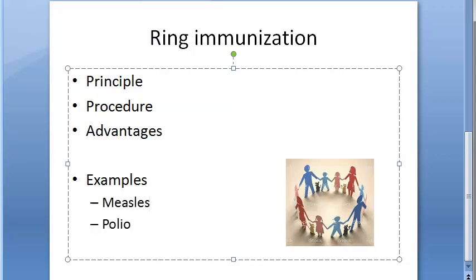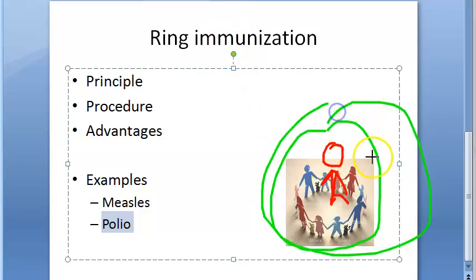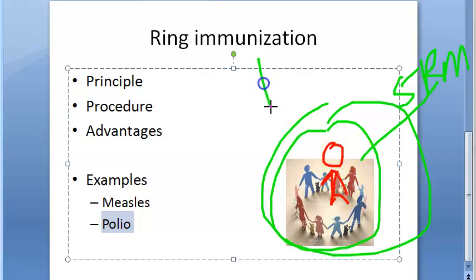Ring immunization is used in cases of measles and polio. Whenever a suspected case of polio is reported, all children below the age of five years — minimum 5000 children — in the affected area covering a radius of five kilometers are given an extra dose of oral polio vaccine within 24 to 48 hours. An extra dose is then repeated to the same children after one month.